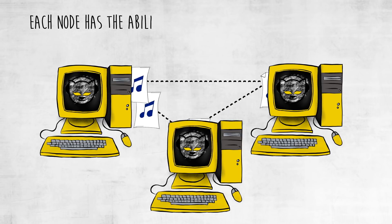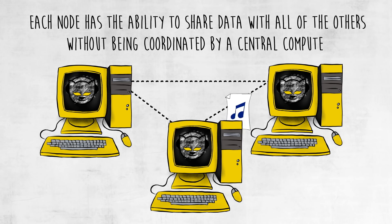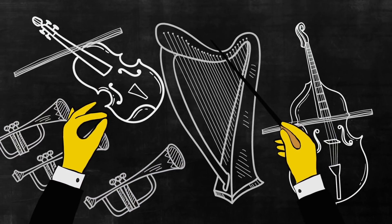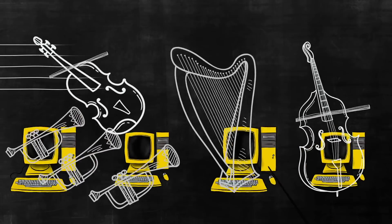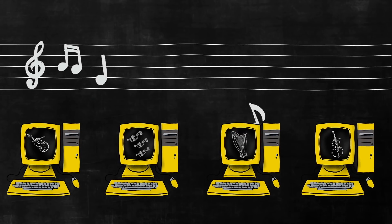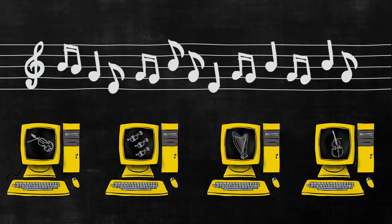Each node, or independent computer on the network, has the ability to share data with all of the others, without being coordinated by a central computer. To continue with the music metaphor, the peer-to-peer networks that power blockchain are like an orchestra without a conductor. Each node is a musician listening to a vast symphony and playing its own music by ear.